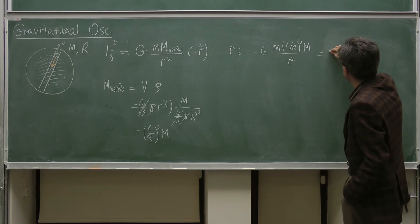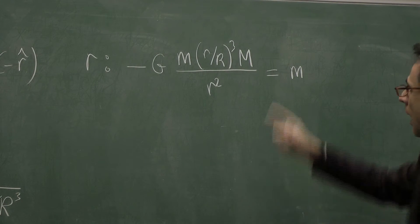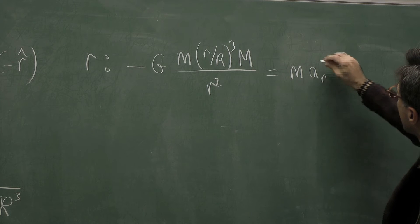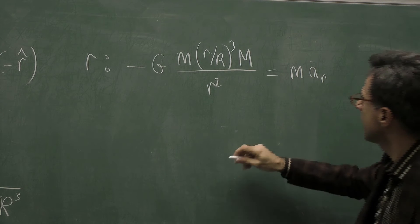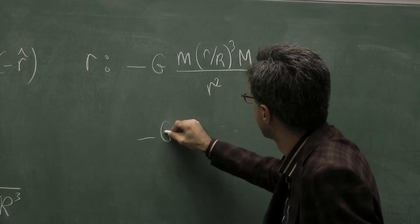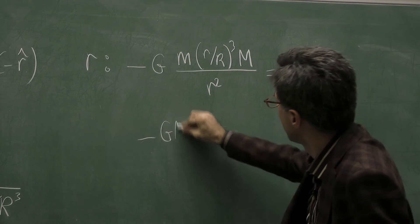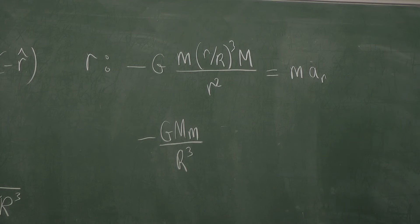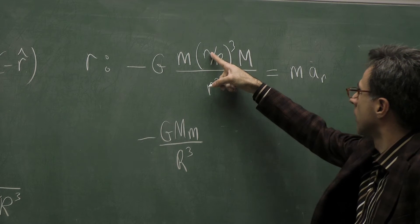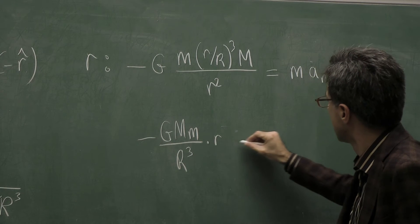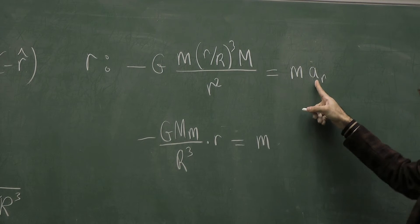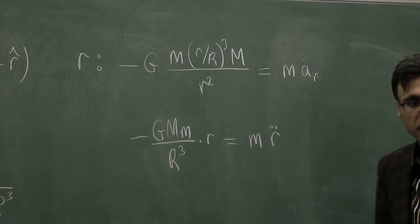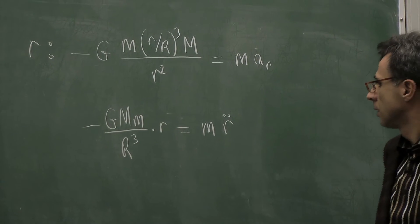This is equal to the mass of the moving object m times the acceleration — the r-component of the acceleration. So we get negative G times M times m divided by R³, and the r³ and r² combine to give r. All these are constants. The radial acceleration is r double-dot, which indicates the second time derivative of the r quantity.